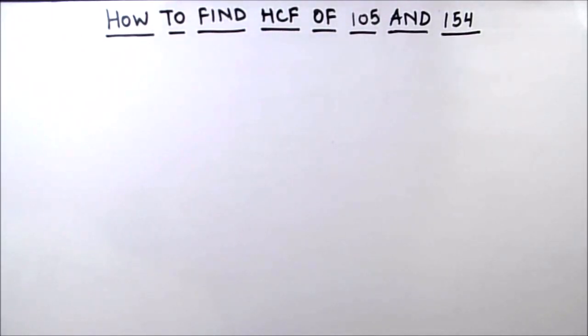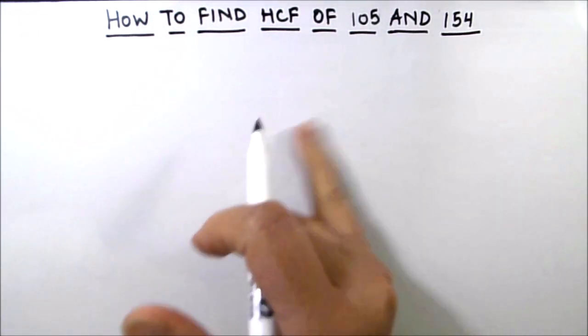Hello everyone, today in this video we are going to learn how to find the HCF of 105 and 154. We will be using the prime factorization method for finding the HCF of the two numbers. HCF is the highest common factor between the two numbers.